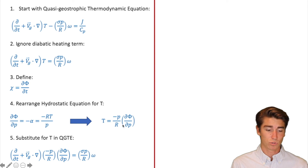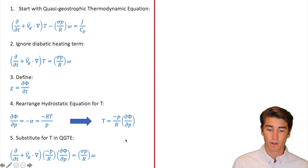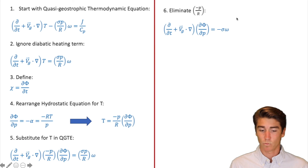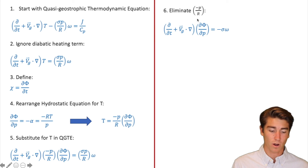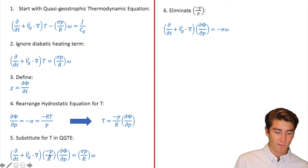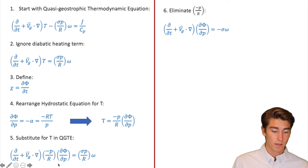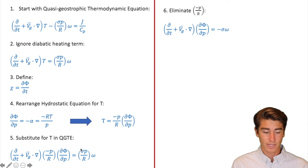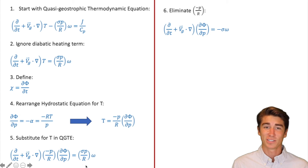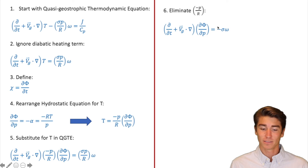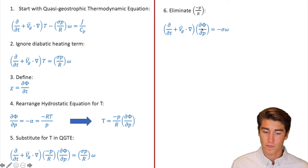So far nothing too drastic, nothing too hard. In step six we are going to eliminate negative P over R. Here you see there is a negative P over R on the left side, and a P over R on the right side. So we're going to bring that R over to the right side and the negative P over to the right side — you can see those are just going to cancel out. The negative stays, and we are left with this.